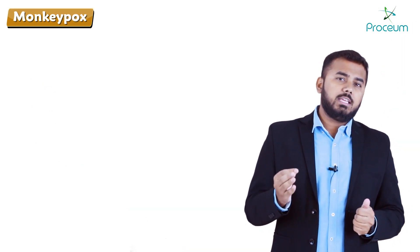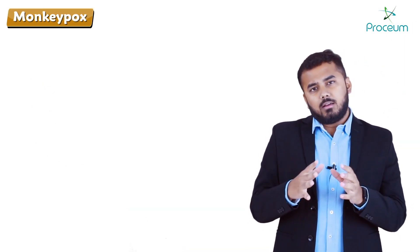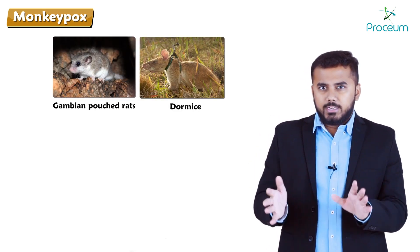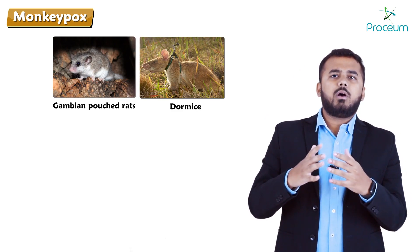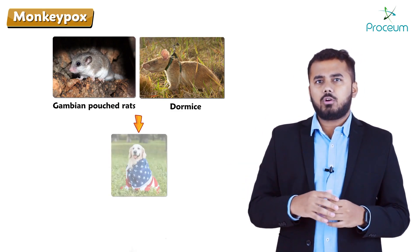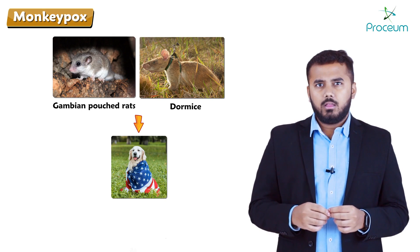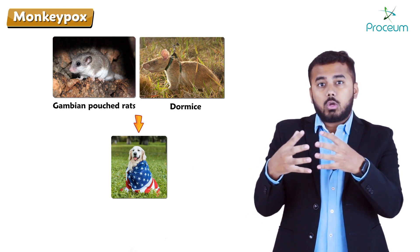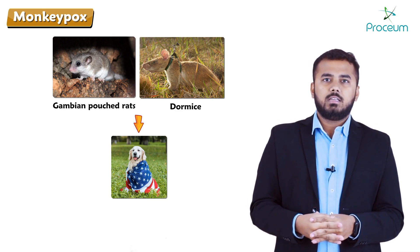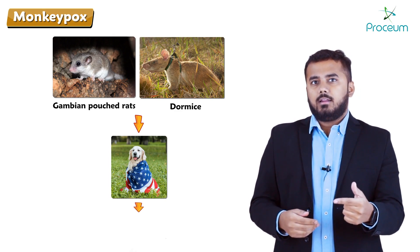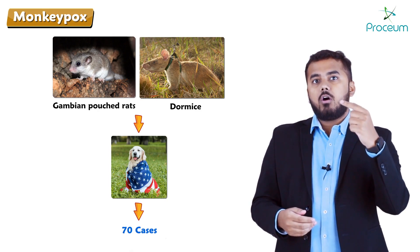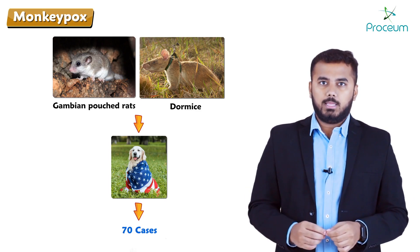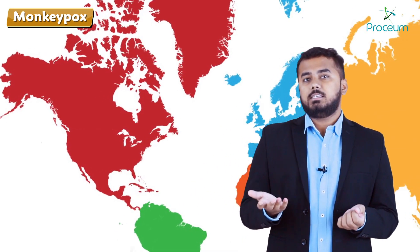In 2003, a man from Ghana brought pets including Gambian rats and dormice to the United States. These animals came into contact with American pet dogs, and those dogs contracted the disease. This led to 70 reported cases of monkeypox in humans in the United States in 2003.